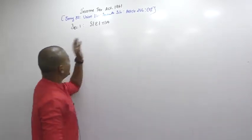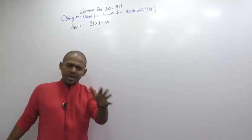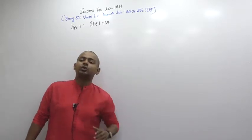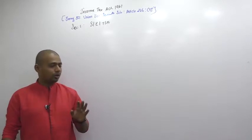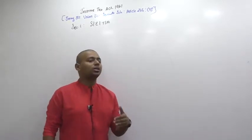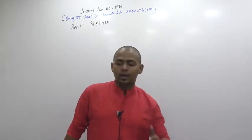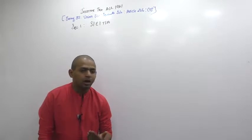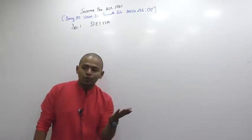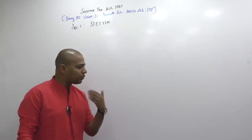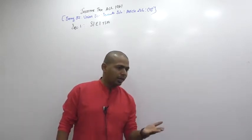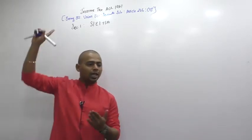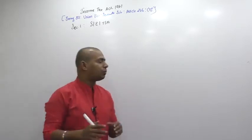SETA means scope, extend, title, and applicability. Every act - you open any act, its first section is this only, Section 1. Usually people will not teach you Section 1 because it doesn't come in the exam. But we are professional students, we must understand even Section 1. What is the objective behind this particular act? Obviously, the objective is to create revenue for government. Why should government create revenue? Because they wanted to give you infrastructure facility. You wanted to live in a civilized society, and civilized society will have certain costs. That cost will be funded by this law. This is the objective behind Income Tax law.